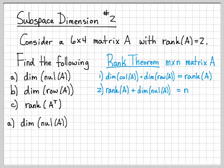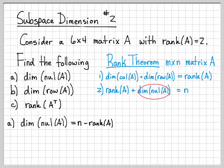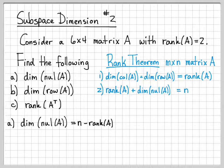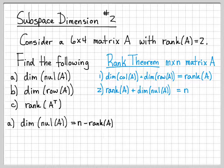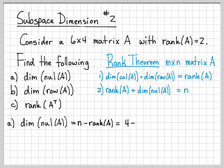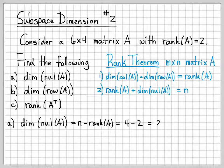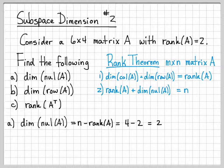So let's use the rank theorem to solve some of these problems. Part A: What is the dimension of the null space? Well, from that second part of the rank theorem, if I solve for the dimension of the null space, the dimension of the null space has to be N minus rank of A. We've already noted that N in our problem is equal to 4. So that must be 4 minus the rank, which is 2. 4 minus 2 is equal to 2. So the dimension of the null space of A has to be equal to 2.